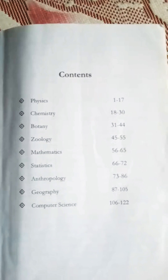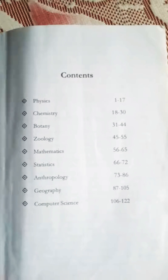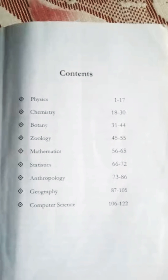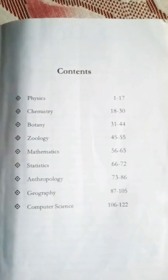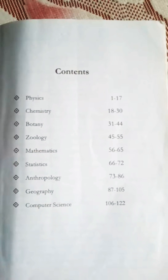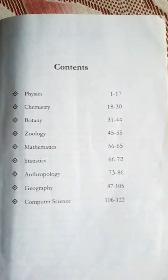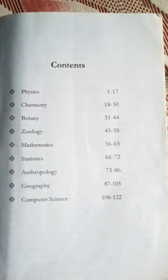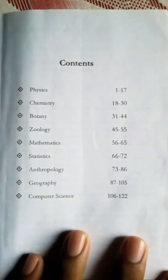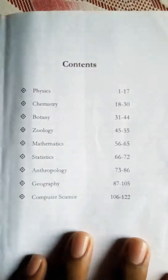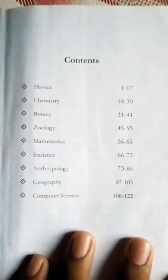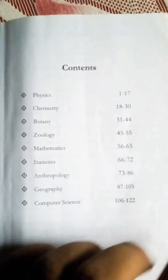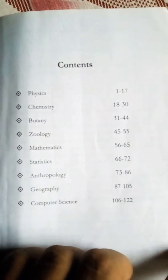I'm going to review the QWERTY University syllabus for the third and fourth semesters. Here is the content: first physics, then chemistry, then botany, then geology, then math and statistics, anthropology, geography, and computer science. Today I'm going to give detailed information about chemistry, which is present on this page.